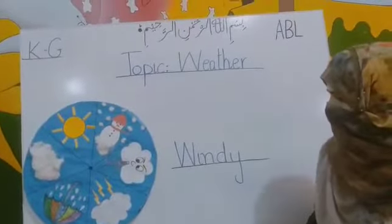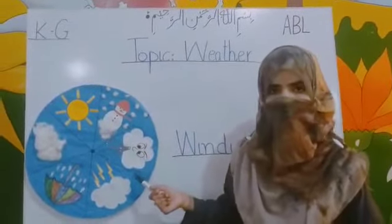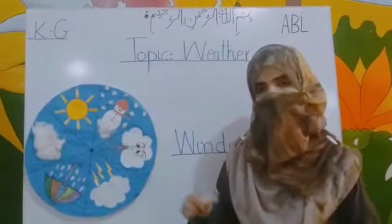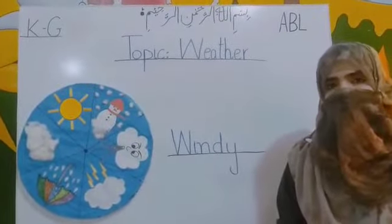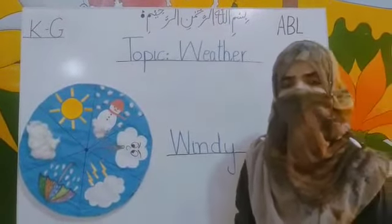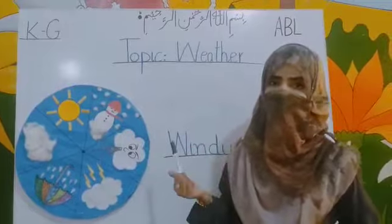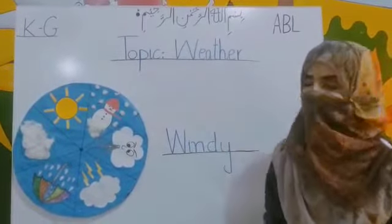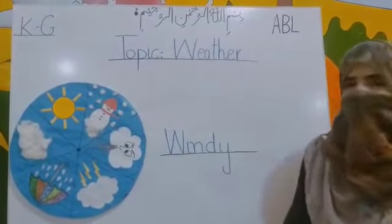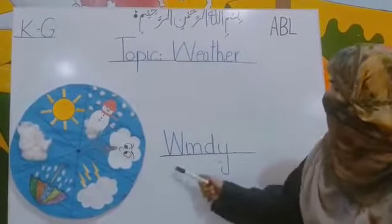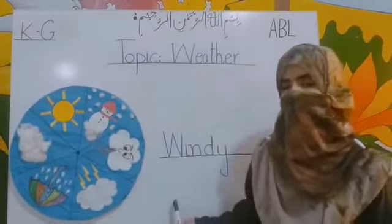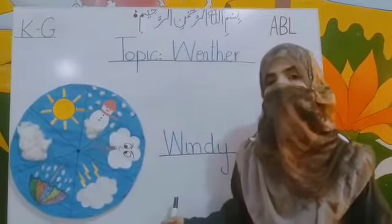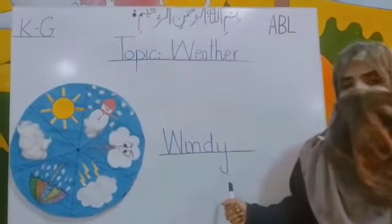Next is windy. When you see trees are moving and wind is blowing heavily, when you see things are moving or flying, that's because of wind. And that's called windy weather. What's it called? Windy weather.